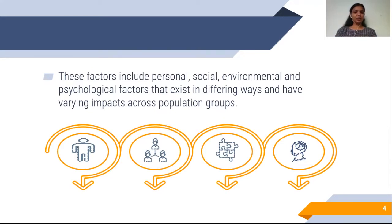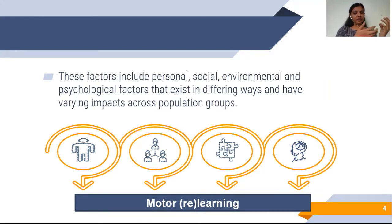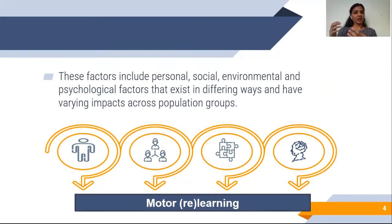These factors combine and have an impact on motor relearning. We can take learning in relation to the normal population or children with cerebral palsy who are not able to achieve function at a normal pace. And we can take relearning in relation to a population like stroke, who have achieved optimal learning and its outcome before but due to some health condition are not able to reproduce it.